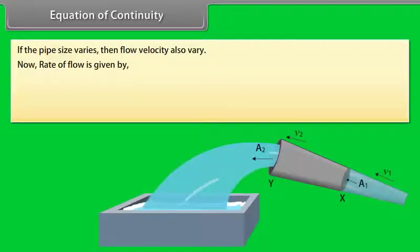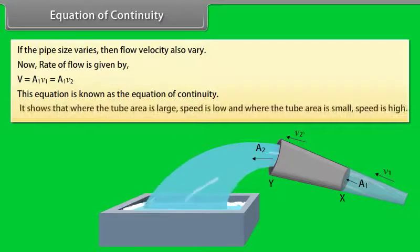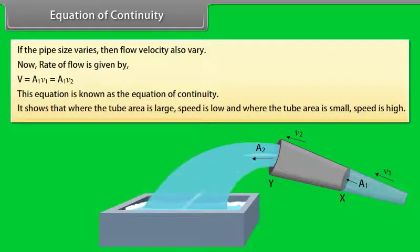Now, rate of flow is given by V equals A₁V₁ equals A₂V₂. This equation is known as the equation of continuity. It shows that where the tube area is large, speed is low and where the tube area is small, speed is high.